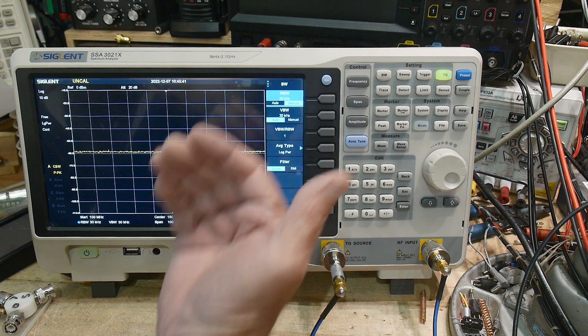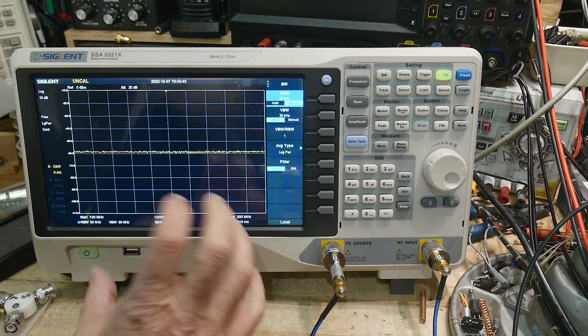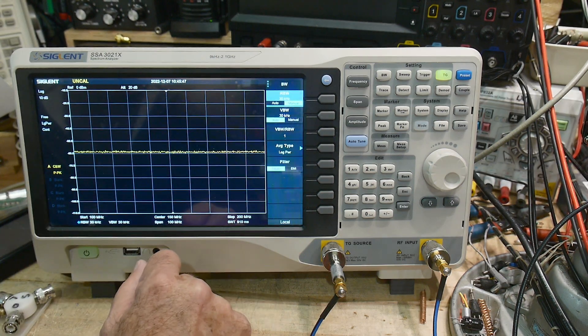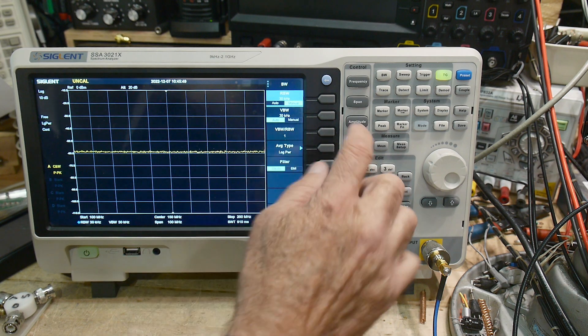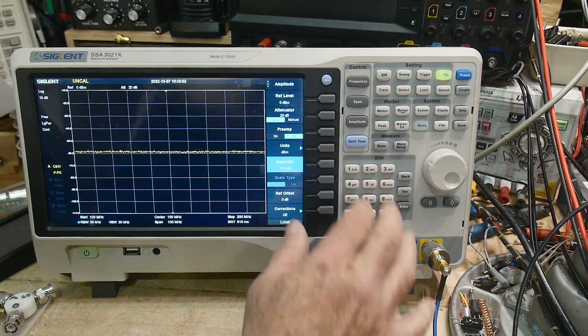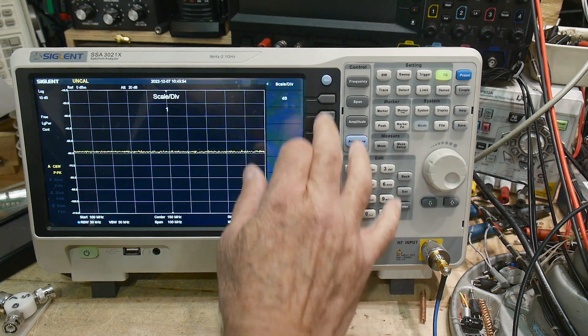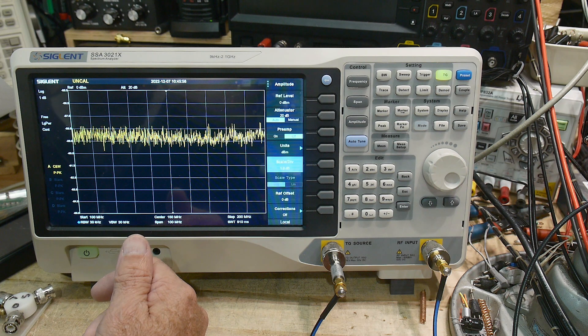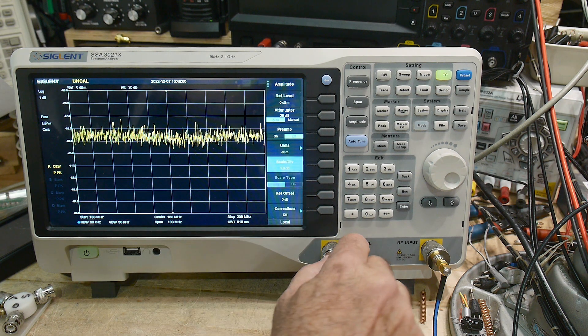There we go. Every time you change the resolution bandwidth, you're increasing the dynamic range of the instrument. Now we're getting a very, very much nicer picture here. We can change our scale to 1 dB. There we go, we're measuring about 58 and a half, something like that.